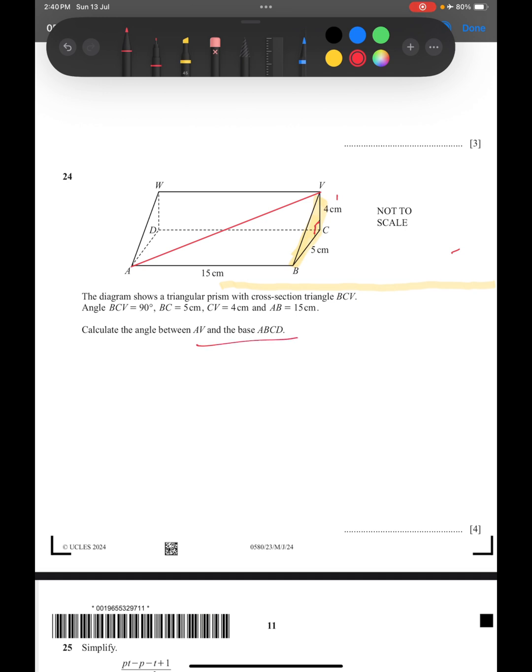And the base ABCD, that means we have to draw one more line, so we can draw it like this joining with AC. So this will be, we have to find actually this angle. So this is the angle between AV and the base ABCD.